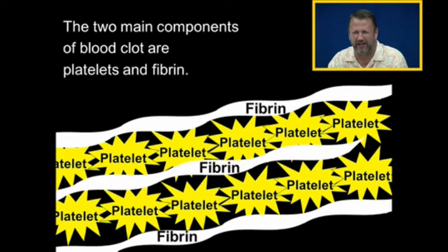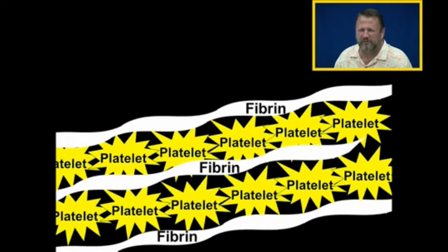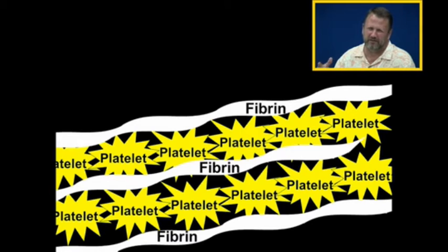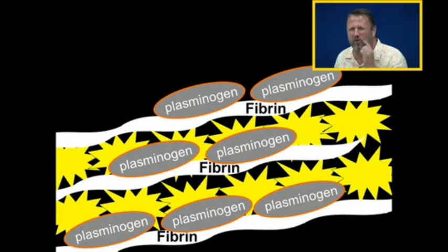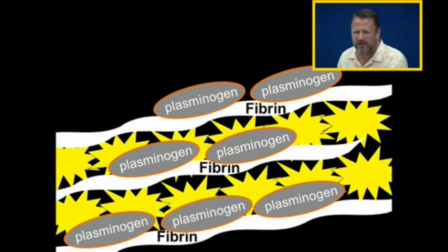Fibrin and platelets are the two main components of the blood clot. The fibrin strands held the blood clot together, and platelets were an essential part of the clot. When fibrin forms, a natural occurring process exists to break this down when the body is ready.